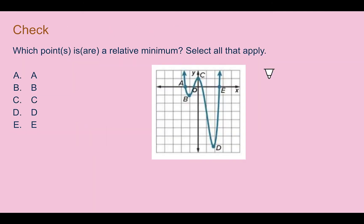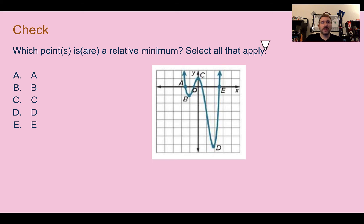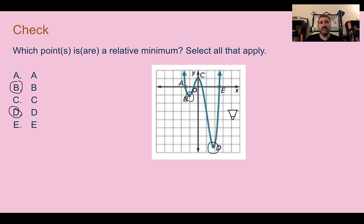Check your understanding: which point or points show the relative minimums? Select all that apply. Pause the video now and complete the check. Check your answer: we want minimums, so we're looking for the bottoms of the hills — B and D. C is a maximum. A and E are both x-intercepts, but they are not the minimum parts of those areas.